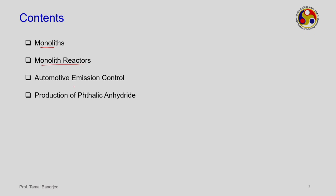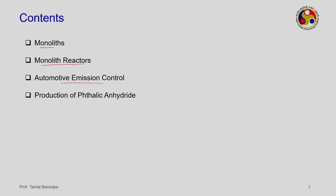The major part of our lecture will focus on automotive emission control. As you are aware, if you own an automobile you need to produce a PUC - the pollution certificate. This pollution certificate involves a catalytic converter which converts the exhaust gases to gases within the limits prescribed by government agencies. The heart of these processes are the monolith reactors. We will also touch upon the production of phthalic anhydride as an example.